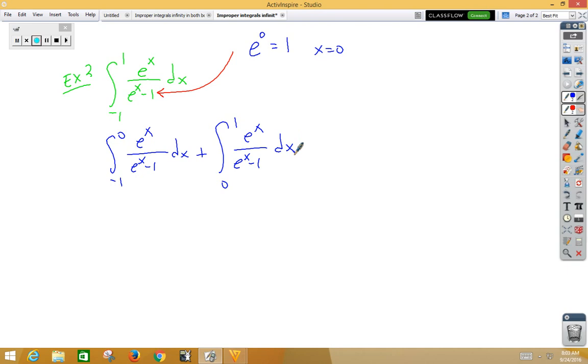Again, we're going to do separate limits. And if either one of them diverges, then the entire thing diverges. So let's see if we get lucky again. We have the limit as l approaches 0. Since we're doing this first integral, we're approaching from the left side. So negative 1 to l, e to the x over e to the x minus 1 dx.